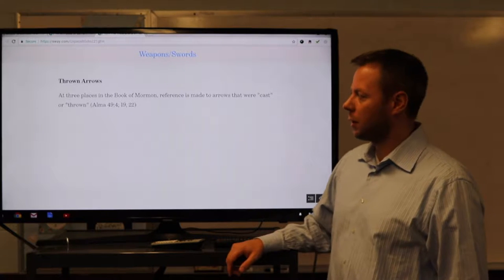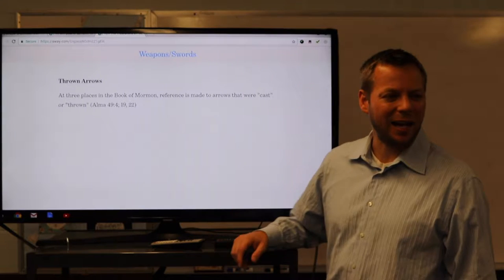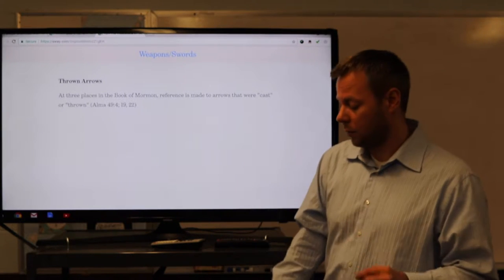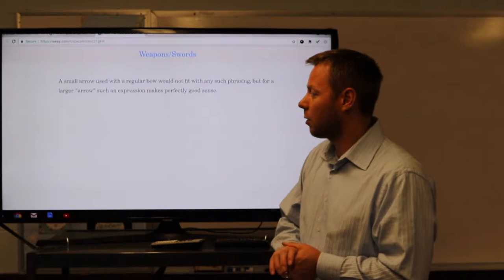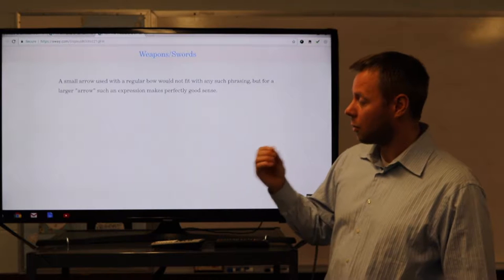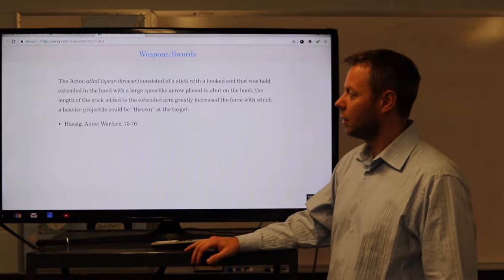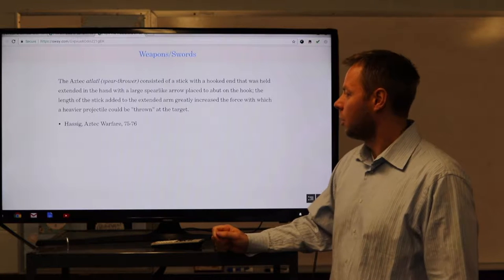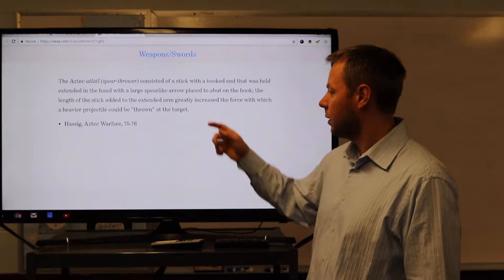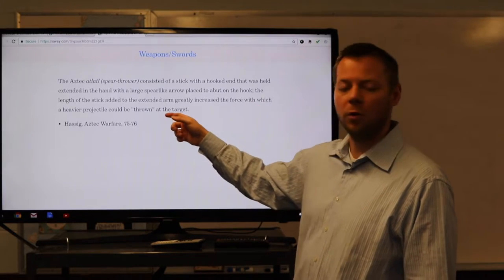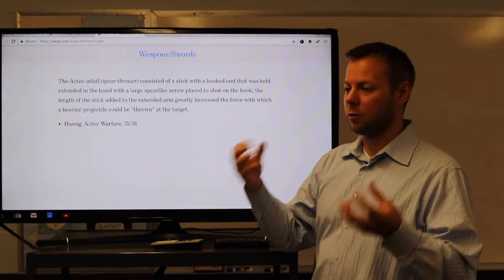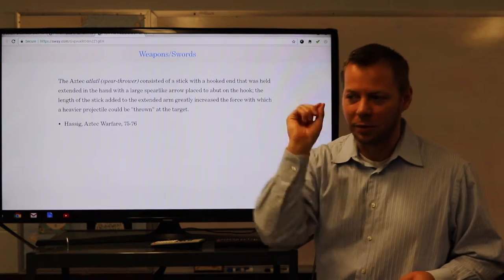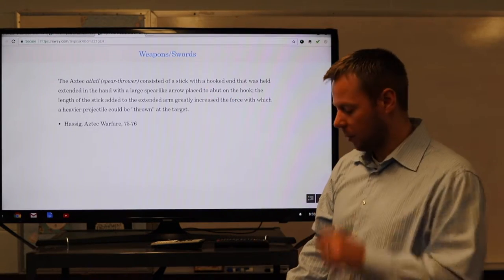Something else that's interesting in the book, at three places we have reference to arrows that were cast or thrown. That's not normally how we would think of an arrow. A normal arrow is used with a bow. So a small arrow that's used with a regular bow would not fit any such phrasing. A larger arrow, quote-unquote, the expression would make good sense. And there is such a larger arrow in Mesoamerica. The Aztec Atlatl spear thrower consisted of a stick with a hooked end that was held extended in the hand with a large spear-like arrow placed above the hook. The length of the stick added to the extended arm greatly increased the force with which a heavier projectile could be thrown at the target. So the arrows that they were throwing, when we read that they throw them, would not have been the little arrows. They wouldn't have been throwing tiny arrows. They would have been throwing these bigger spear-like arrows.